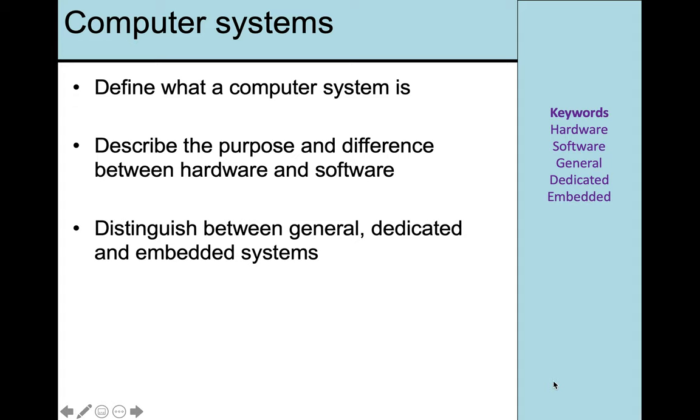Hi and thanks for watching Computer Science MS5. Today we're starting from the very beginning of the OCR GCSE spec and we're looking at computer systems. By the end of the day we should be able to define what a computer system is, describe the purpose and difference between hardware and software, and distinguish between general, dedicated, and embedded systems.